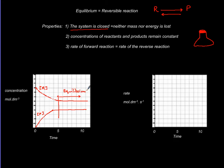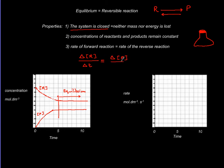The last attribute is that the rate of the forward reaction is equal to the rate of the reverse reaction at equilibrium. Remember from kinetics, rate is the change in concentration of reactant with respect to time — delta concentration of reactants over time. At equilibrium this equals the concentration of products over time, denoted with a subscript EQ.